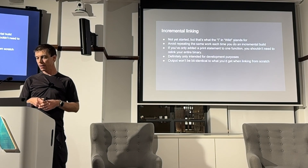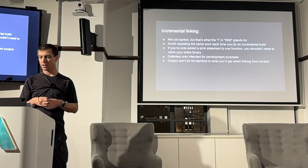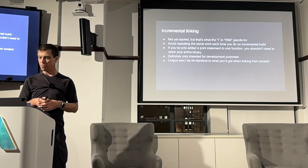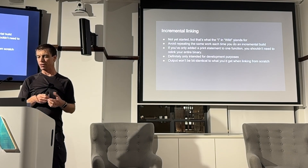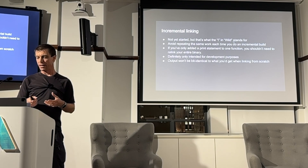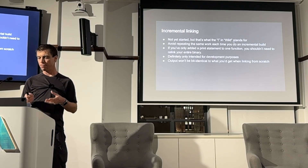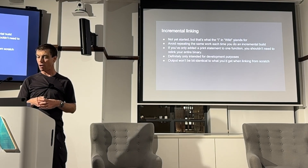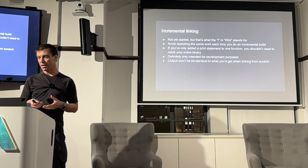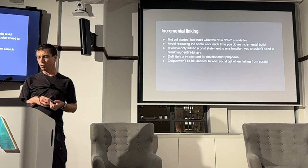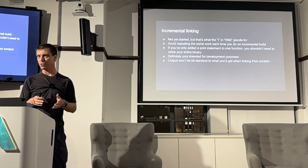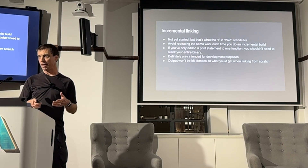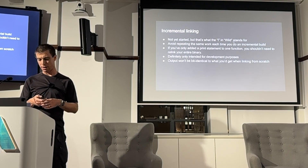I haven't yet started work on incremental linking but that is what the 'I' stands for, so I am somewhat committed. The idea is to avoid repeating work each time you do an incremental rebuild. If you've only added a print statement to one function you shouldn't need to relink your entire binary. This is not intended for production builds where you'd want reproducible output, but for rapid development it should hopefully be good. The output won't be bit-identical and will be slightly larger than a normal link because we need to allow extra space in sections for them to grow as you make edits. The linker will keep track of where everything is, and if you make an edit it will go back and change just what's needed without having to redo everything.